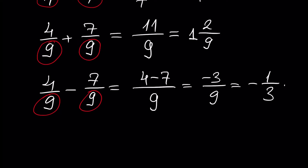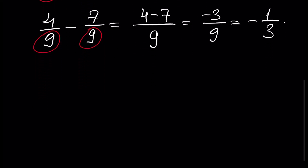That was the main rule. The next rule is: what if our denominators differ? Then we first have to reduce fractions to a common denominator. To learn how to reduce fractions to a common denominator, watch our previous tutorials. Let's give an example with different denominators.